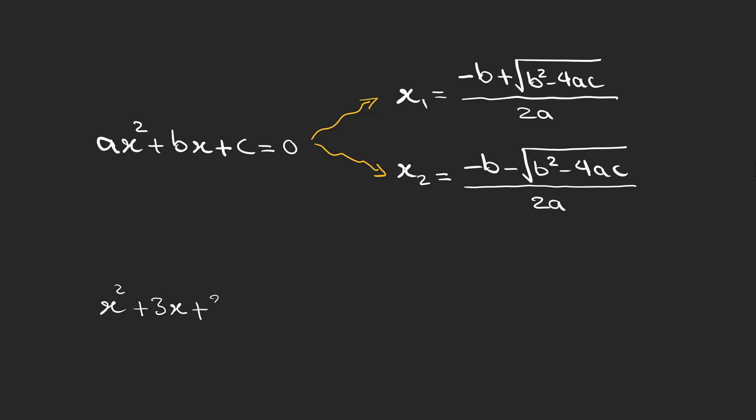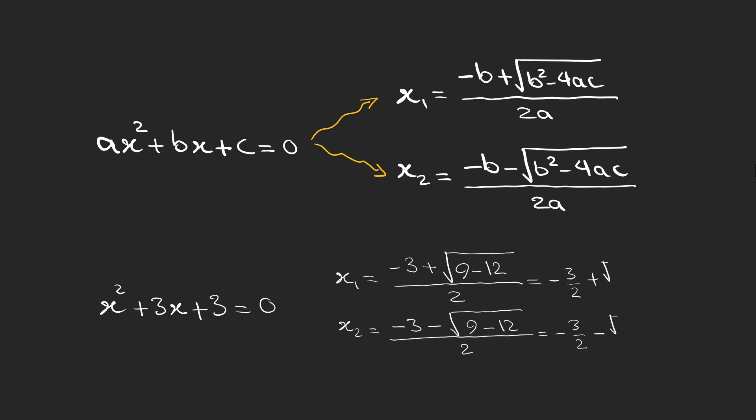For example, if I have this equation I can find these two solutions as x1 and x2, and we can see that the square root here is negative and we are actually dealing with some numbers that are called complex numbers.